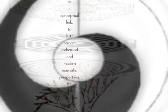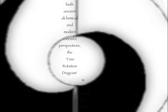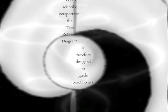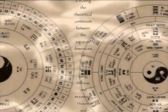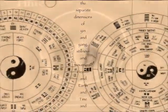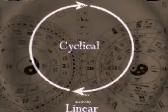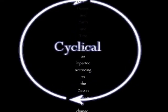As a conceptual link to both ancient, alchemical, and modern scientific perspectives, the tree rotation diagram is therefore designed to guide practitioners in activating a theoretical continuum between the separate dimensions of yin and yang, stillness and movement, Heaven and Earth, and time and space, as imparted according to the Taoist art and science of change.